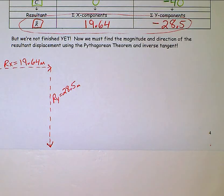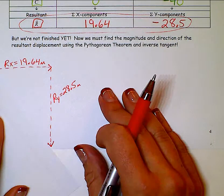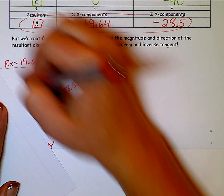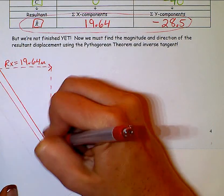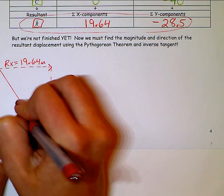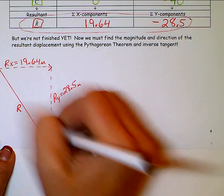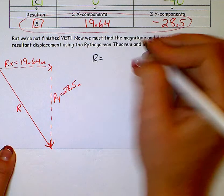So my resultant goes from the very beginning to the very end. Again, make sure you've got arrows on everything. So this is what I'm going to try and find. First part, find the magnitude. Just how far the cow is now from where she began. Use Pythagorean theorem.